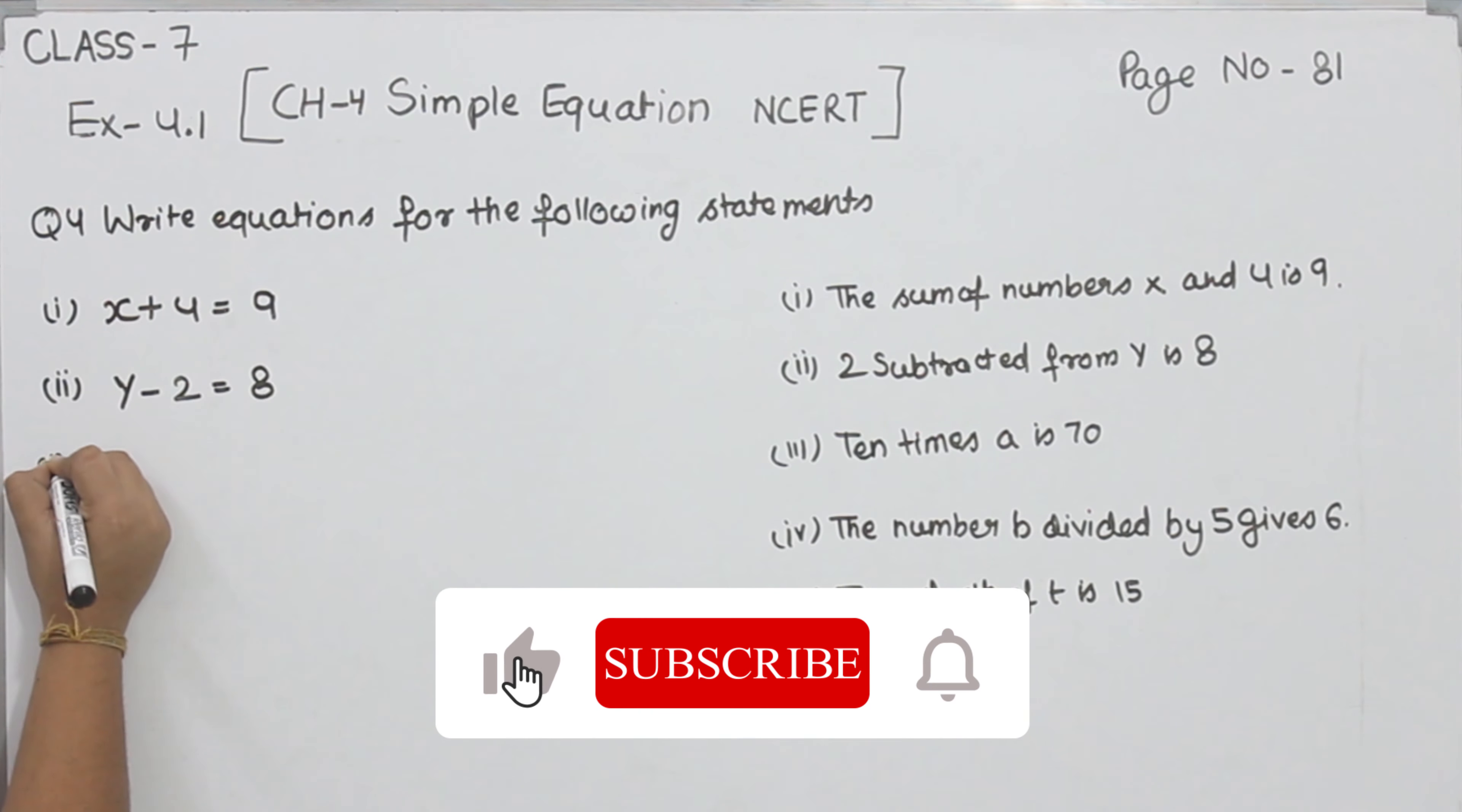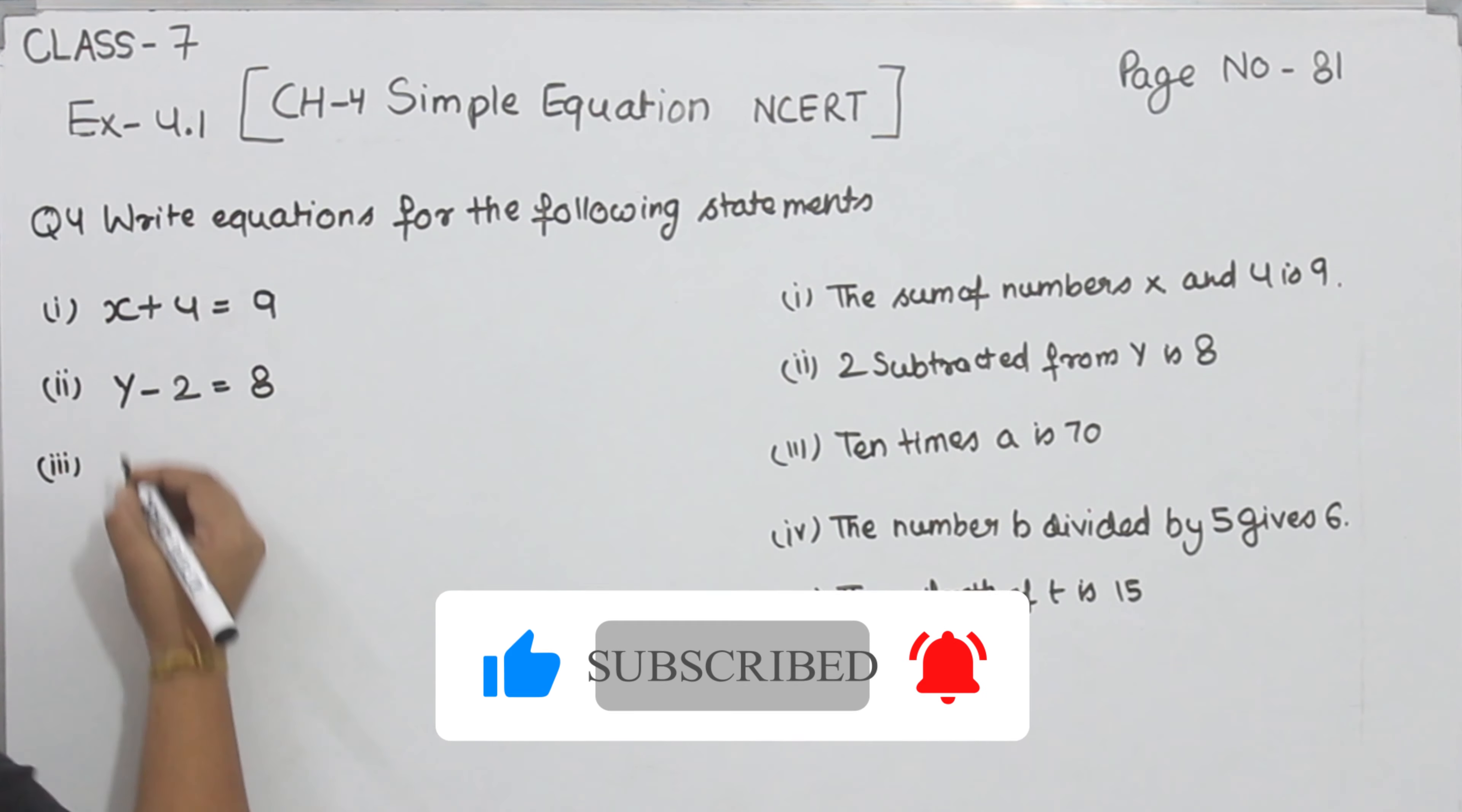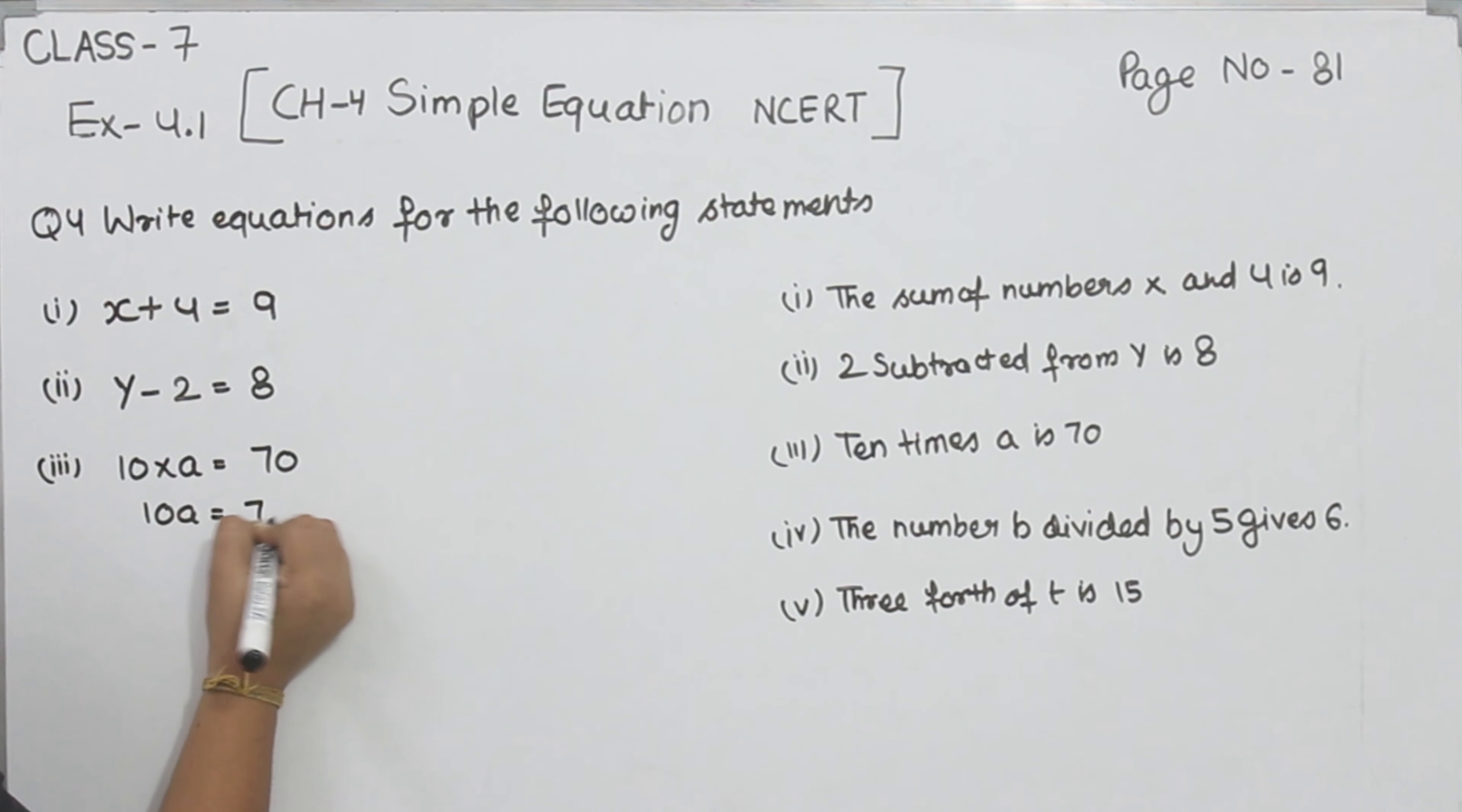Now comes part 3. 10 times a is 70. 10 times means 10 multiplied by a is equal to 70. That is 10a is equal to 70.